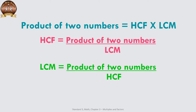The product of two numbers is equal to the HCF of those two numbers multiplied by the LCM of those two numbers. So, the HCF equals the product of the two numbers divided by the LCM, and the LCM equals the product of the two numbers divided by the HCF.